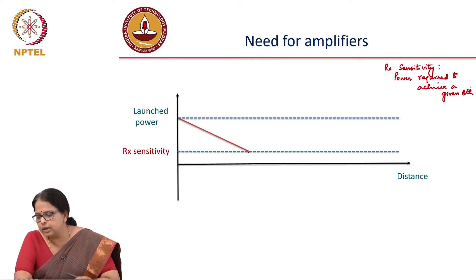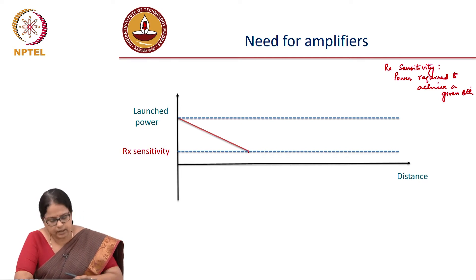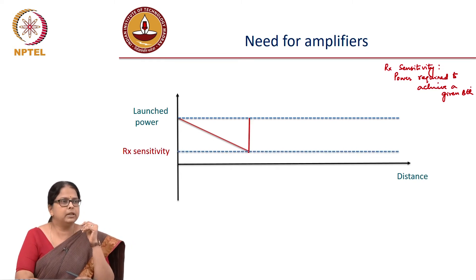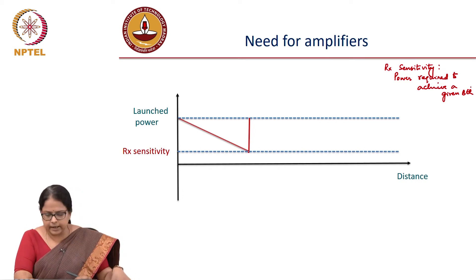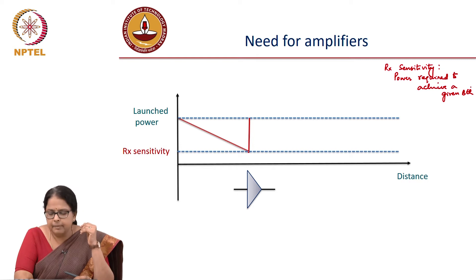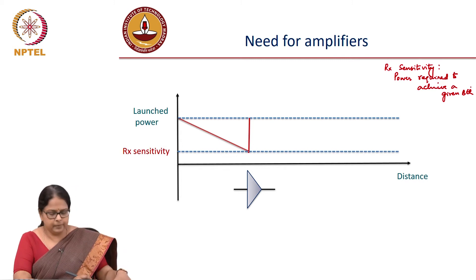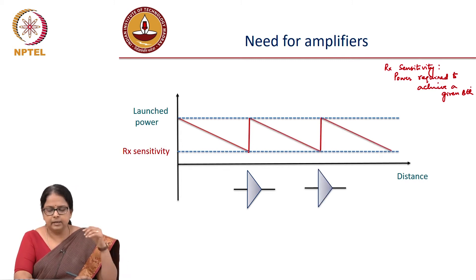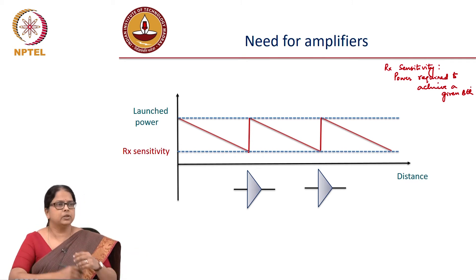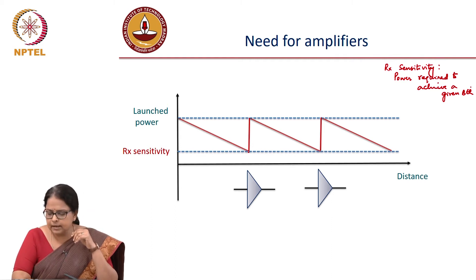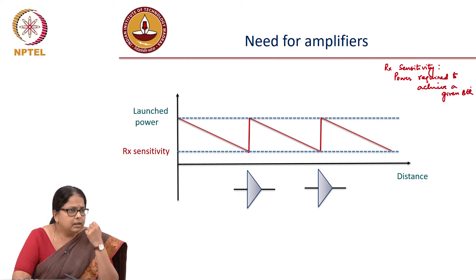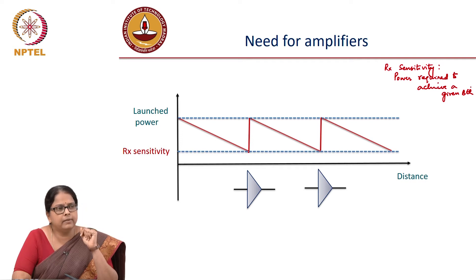But what if I want to transport over a longer distance? What I can do is amplify the power, bring it back to the original launched power, with an amplifier placed at the location where my power is falling down to the receiver sensitivity value, and then the process can repeat. I can go on doing this to satisfy the required distance of transmission. These are longer-haul links where the requirement is to transport over a very large distance.